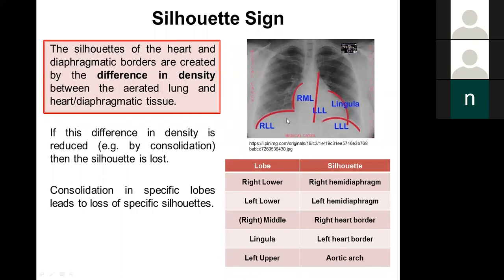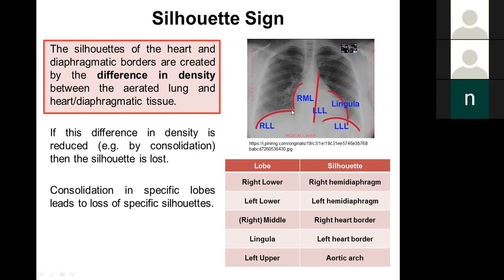If you lose the left hemidiaphragm outline, consolidation is in the left lower lobe. If you lose the right heart border, consolidation is in the middle lobe. If you lose the left heart border, consolidation is in the lingula — which sits right up against it. The aortic arch sits against the left upper lobe, so loss of the aortic arch suggests left upper lobe consolidation. The right upper lobe sits next to the SVC, which isn't really visible on most chest x-rays, so it's not useful for silhouette assessment.